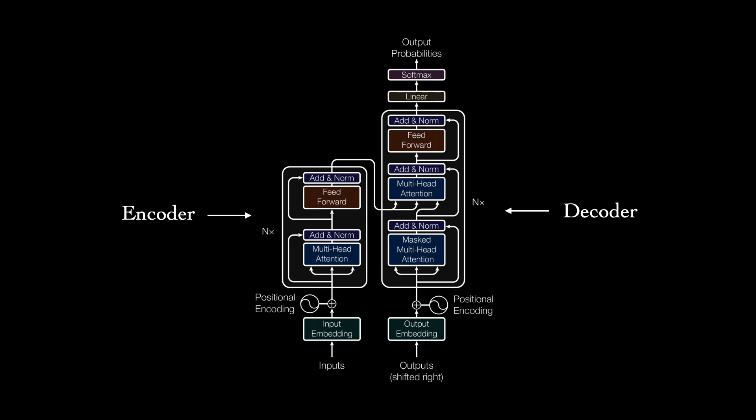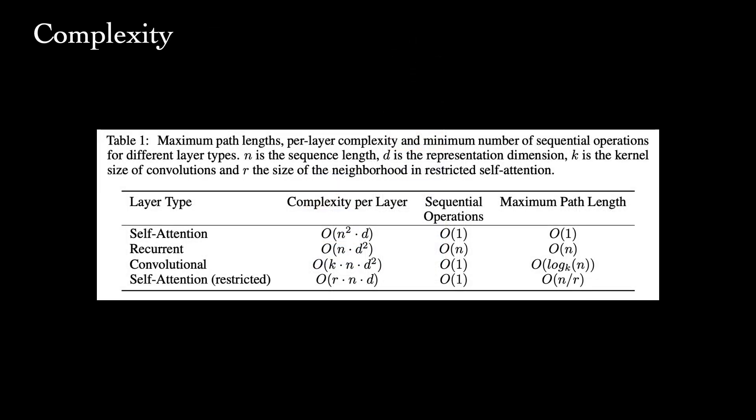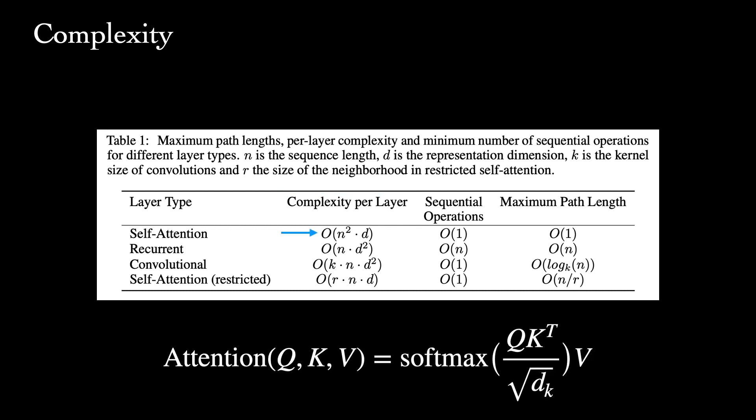Towards the end of "Attention is All You Need," there's a complexity analysis for various architectures. Let's just look at self-attention versus recurrence. n will represent the sequence length and d the representation dimensionality. We already discussed the differences in terms of sequential operations and path lengths earlier in the video. For self-attention, the n-squared times d complexity comes from the matrix multiplications used in dot product attention—standard multiplication leads to O(n² × d) operations.